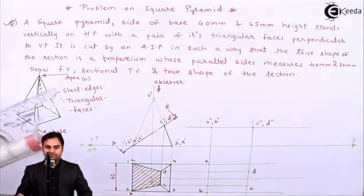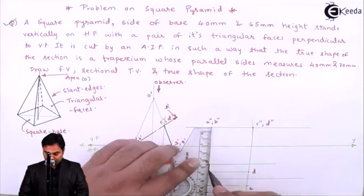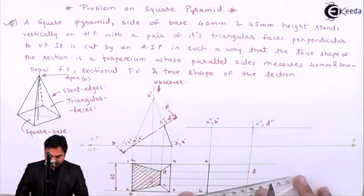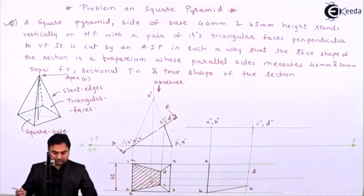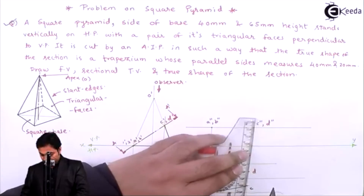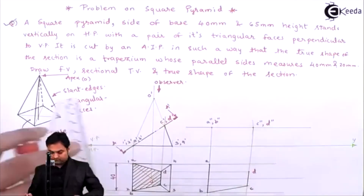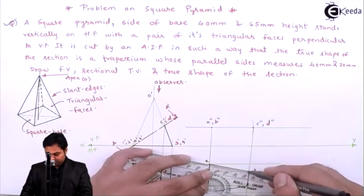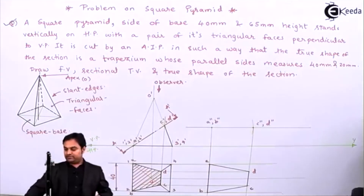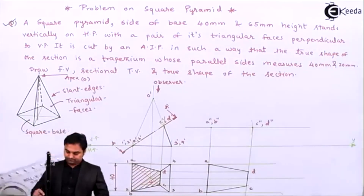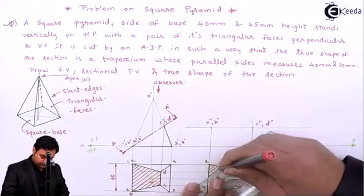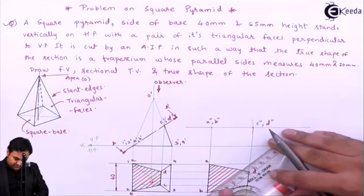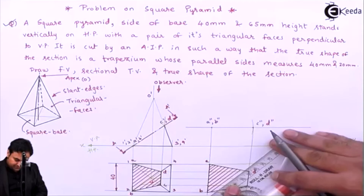Joining them in proper sequence: A to B is connected, then B to C is connected, then C to D, and finally A to D is connected. Drawing section lines through the true shape, inclined at 45 degrees.